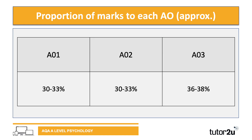Looking at the proportion of marks for each assessment objective across each paper, the key thing to emphasise is that there are more marks for your AO3 assessment objective. This basically means you really need to make sure that you are capable of writing and analysing — criticising strengths and weaknesses of a study or theory. 36% to 38% of your marks are going to be for AO3, and your AO1 and AO2 is between 30% and 33%. AO1 is arguably the more basic assessment objective — describe and outline something. AO2 is a bit harder, and AO3 as well.